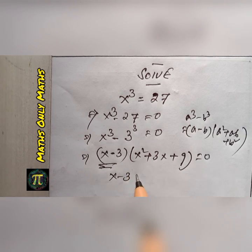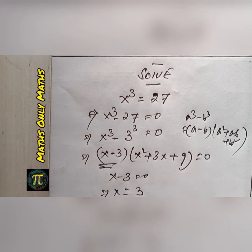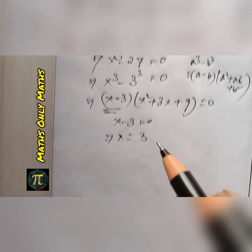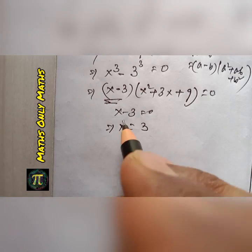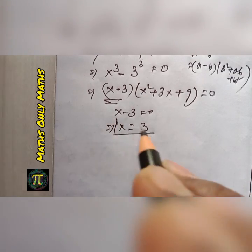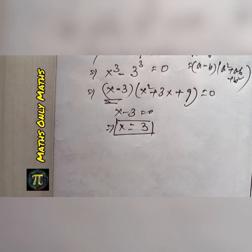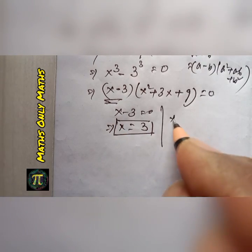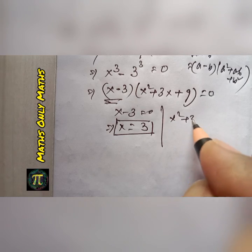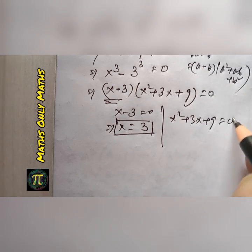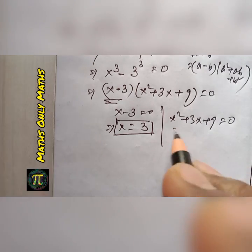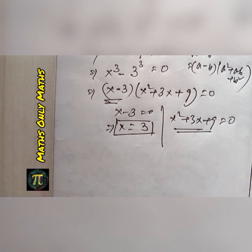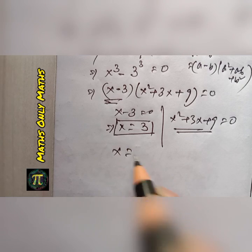Either x - 3 = 0, giving x = 3 as one solution, or x² + 3x + 9 = 0. This second factor is a quadratic equation that we need to solve using the quadratic formula.